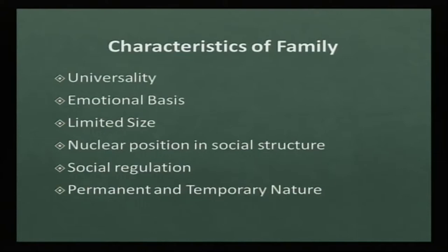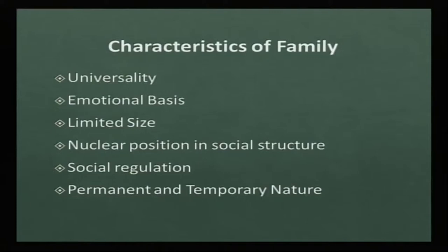Let us discuss the different characteristics of family. First is universality — family as an institution is found all over the world, whether in western, Indian, tribal, or urban society, and the functions they perform — procreation, nurturance, and socialization of family members — are more or less similar everywhere. The role of family remains the same whether in urban or rural, western or eastern society.